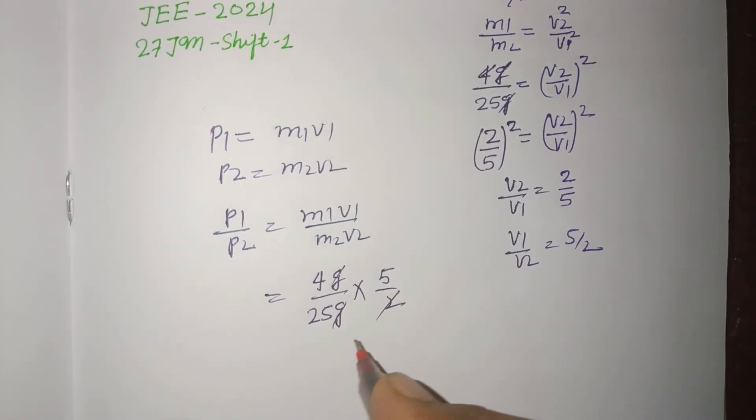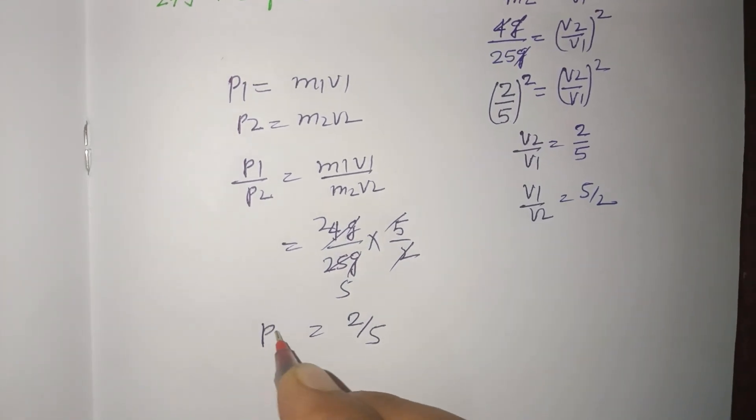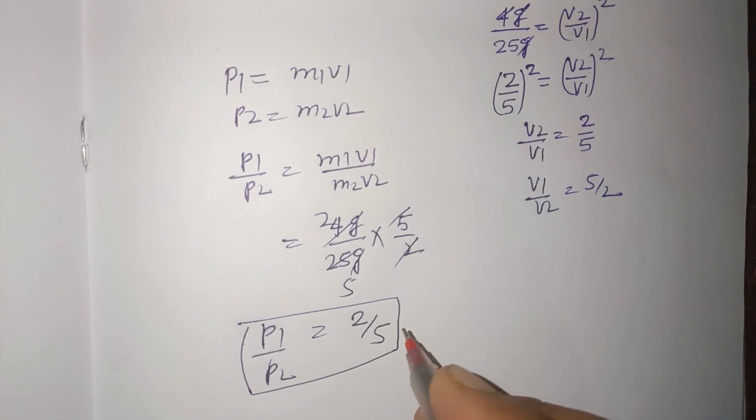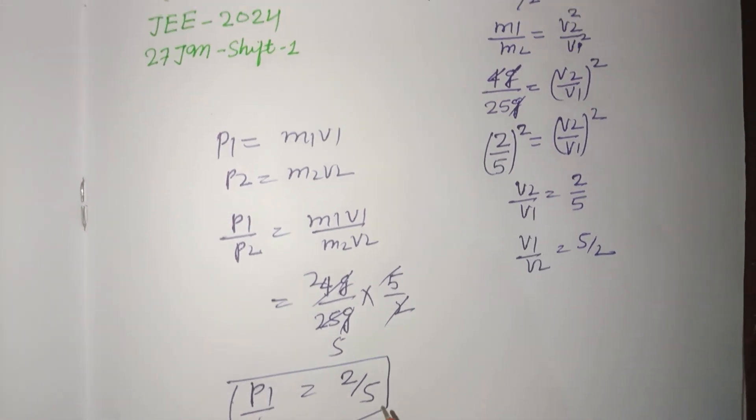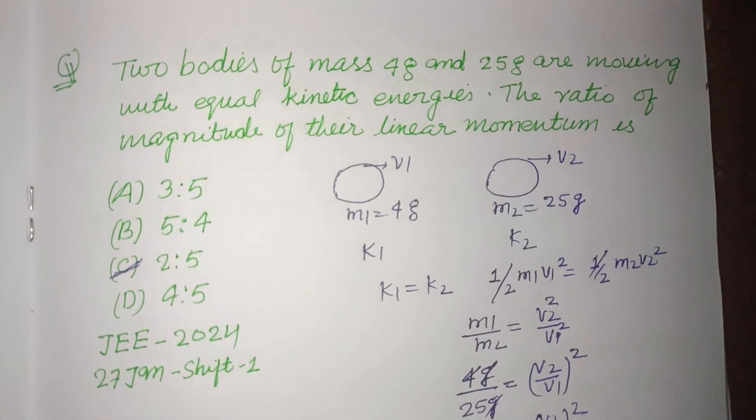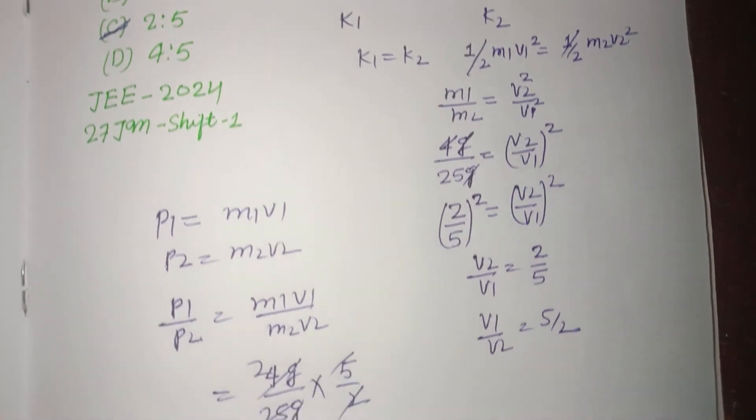So we get 2 upon 5 is the ratio of their linear momentum. So the answer to this question is C. I hope you got it. Please like the video, subscribe to the channel. Thanks for watching.